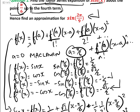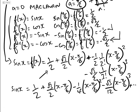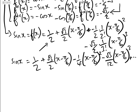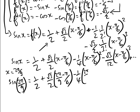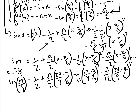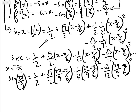That's the answer to part 1. For part 2, we use this expansion to find an approximation for sine of 2π over 9. We substitute x equals 2π over 9: sine of 2π over 9 equals one half, plus root 3 over 2 times (2π over 9 minus π over 6), minus one quarter times (2π over 9 minus π over 6) squared, minus root 3 over 12 times (2π over 9 minus π over 6) cubed.